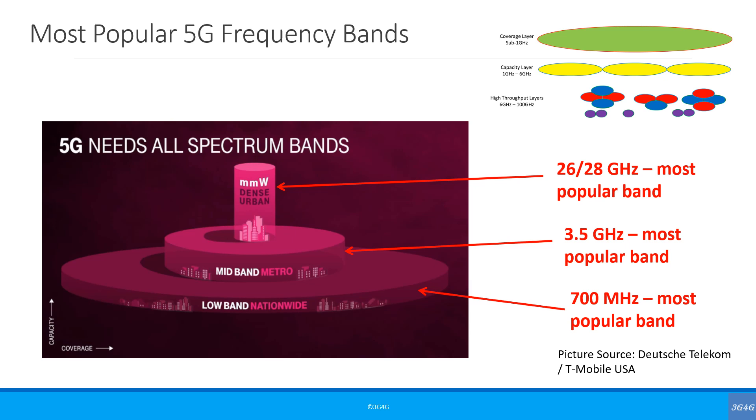In summary, the most popular coverage layer frequency is 700 MHz, 3.5 GHz is the most popular capacity layer band, and 26 to 28 GHz is the most popular high throughput layer frequency.